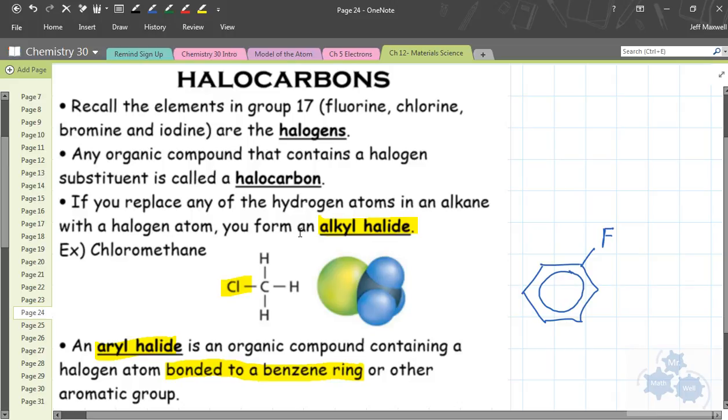Alright, so halocarbons. Halogens are in group 17. Any organic compound that contains a halogen substituent is a halocarbon.